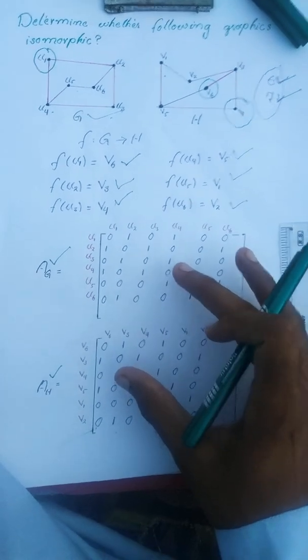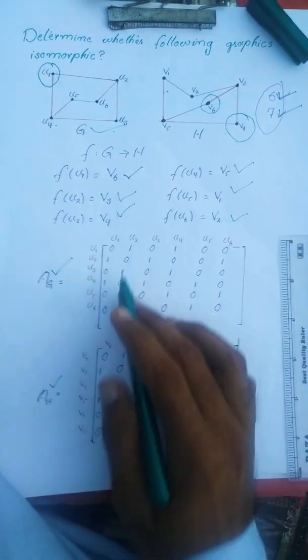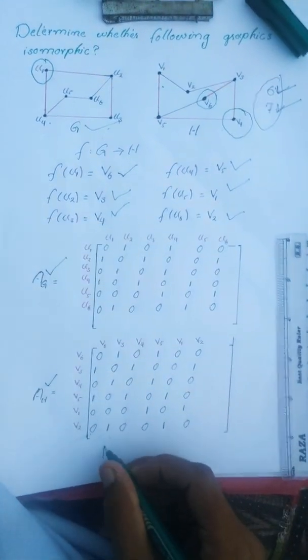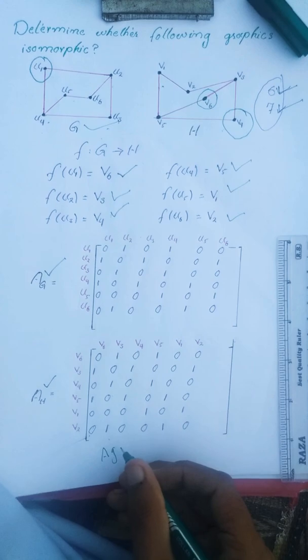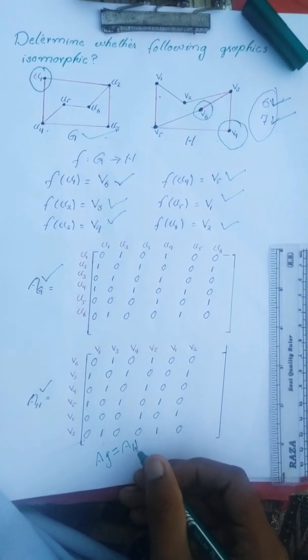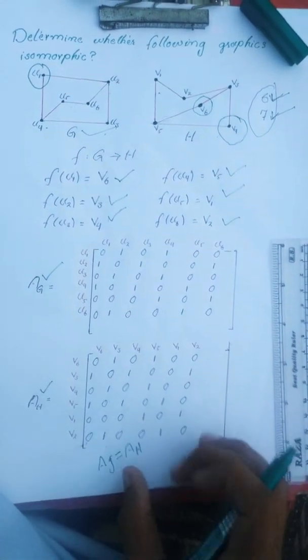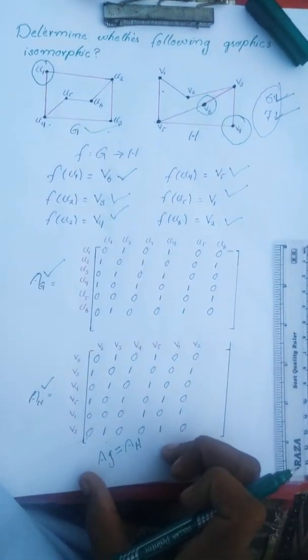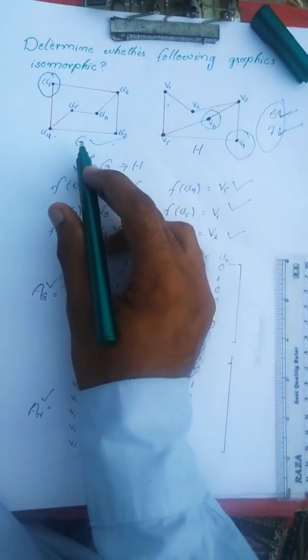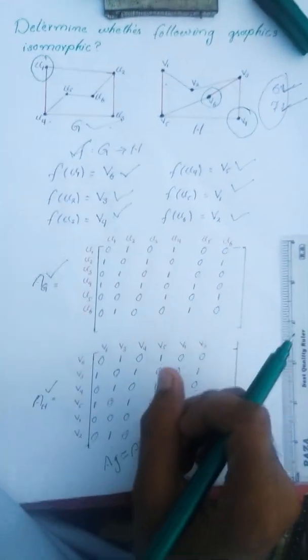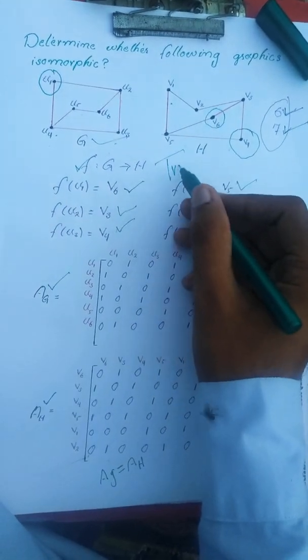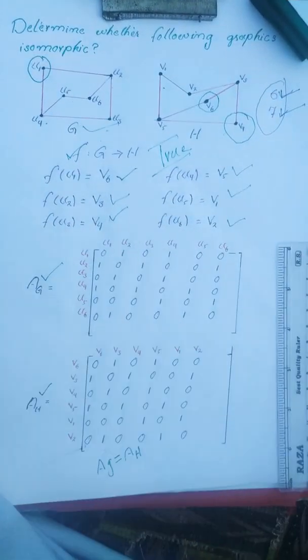When we check these two matrices, when we look at these two matrices we see that these two matrices are identical or same. Since these two matrices are same which is the final condition of isomorphism, we can say that G and H graphs are isomorphic. So finally we can say that it is true that these two graphs are isomorphic. Thank you very much.